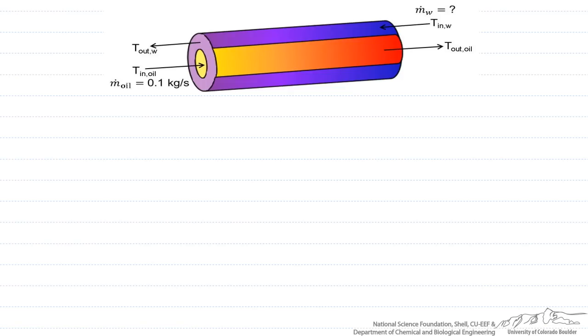Heat exchangers are generally adiabatic, which means that all the heat that is lost by one of the fluids is gained by the other fluid. In other words, there is no heat loss to the surroundings.